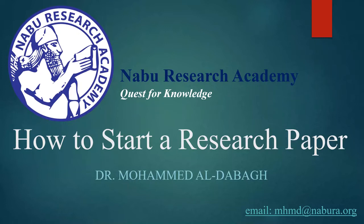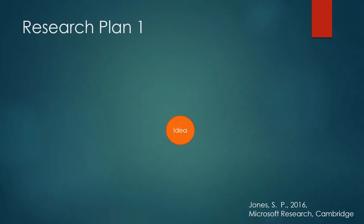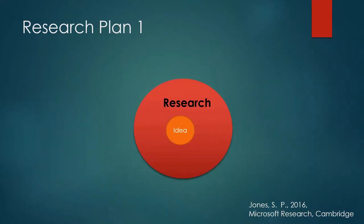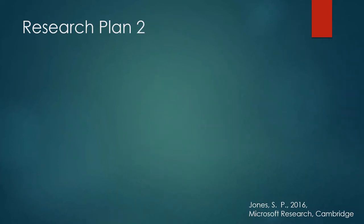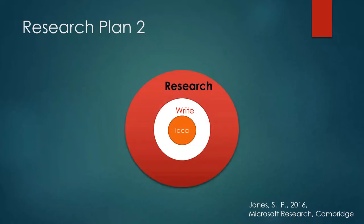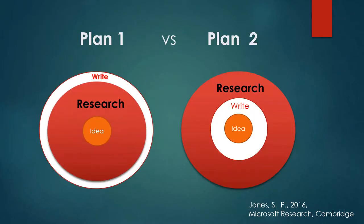What I noticed is that many authors don't know how to make a plan to write the research paper. There are two research plans. The first one: you have an idea, you do research about the idea, then you write about it. The second plan: you have an idea, you write about it, then you do the research.